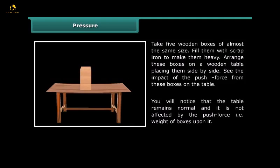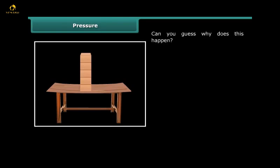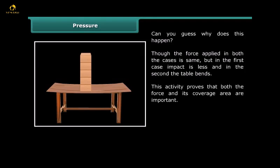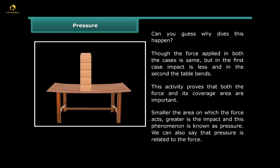Now rearrange these boxes on the same table, placing them towards the center and one over the other. Now see the impact. In this arrangement, the table either bends or breaks under the weight of boxes. Can you guess why does this happen? Though the force applied in both cases is same, in the first case impact is less and in the second the table bends. This activity proves that both the force and its coverage area are important. Smaller the area on which the force acts, greater is the impact, and this phenomenon is known as pressure. We can also say that pressure is related to the force.